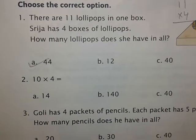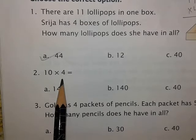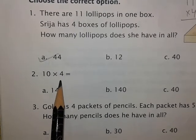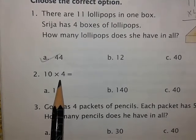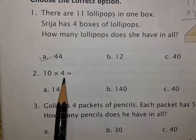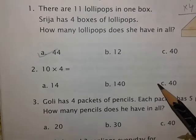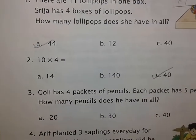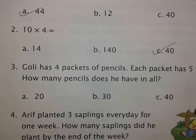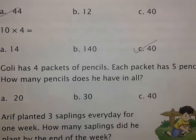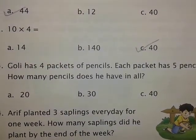The answer is forty-four. Give a tick mark on forty-four. Ten into four — if you have memorized the table of ten, you will also tick forty-four. Those who have not memorized the table of four know that four into ten is forty. So we put a tick mark on option C.